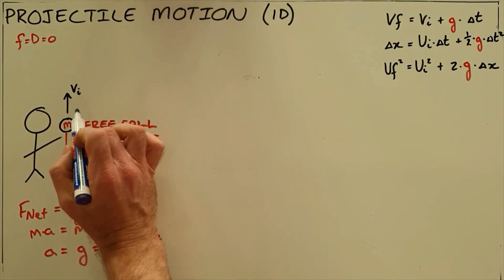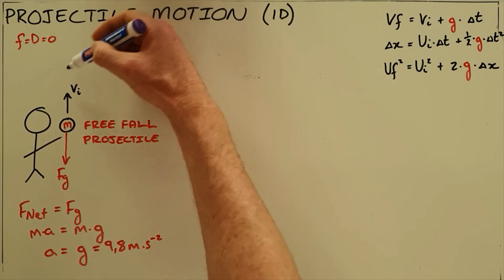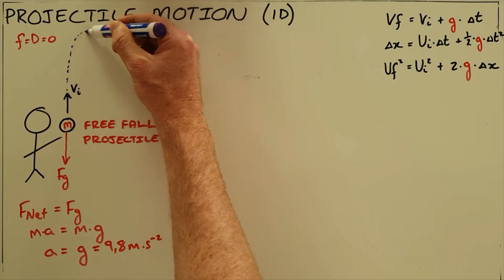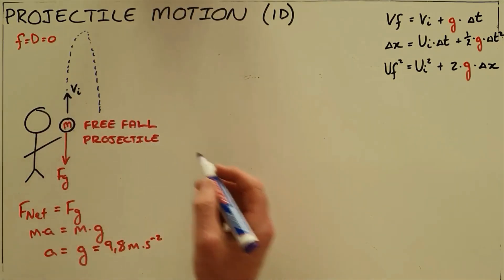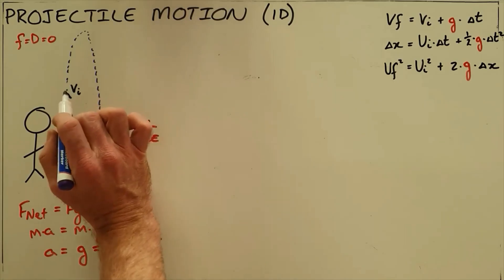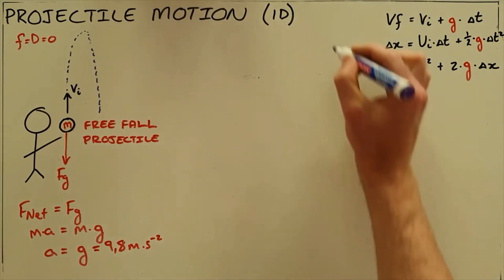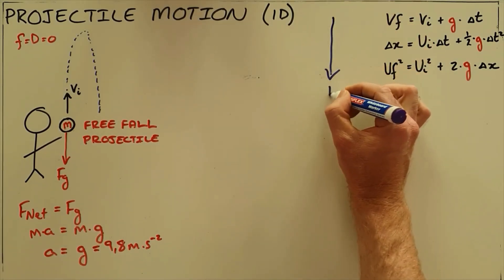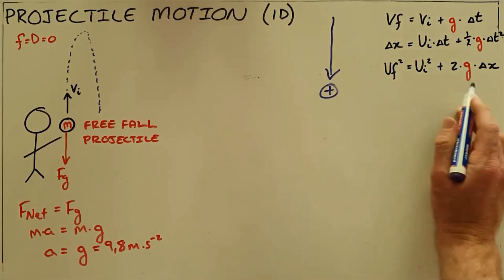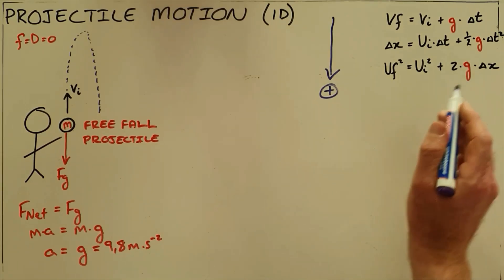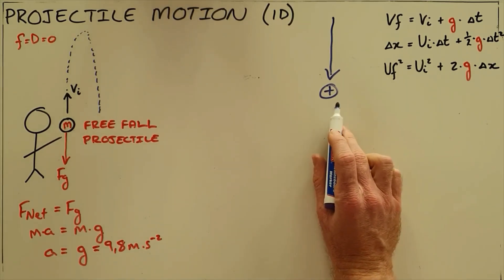When we throw an object upward, it has an initial velocity upward, travels until reaching a maximum height, and then starts traveling downward, with velocity constantly changing. Since motion can occur in two directions, it is important to define a reference direction as positive. We prefer to use downward as positive, so acceleration is always positive and any negative value refers to an upward vector.